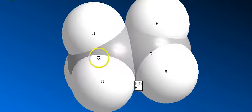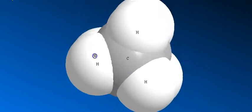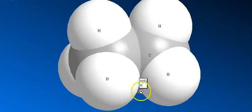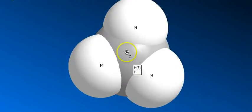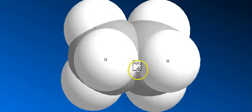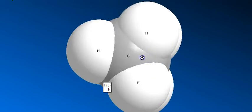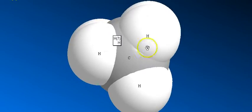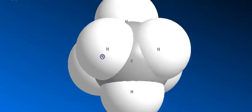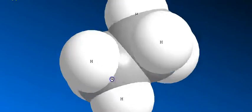Here is the space-filling model of ethane in the eclipsed conformation. You can clearly see the two hydrogens are overlapping and eclipsing each other, almost invading each other's space. This is obviously much less stable than the staggered conformation. Now here is the space-filling model of the staggered conformation — it looks much nicer. There's plenty of space between the hydrogens, so this is the more stable conformation.